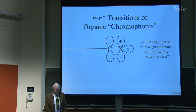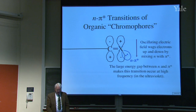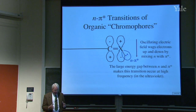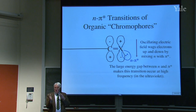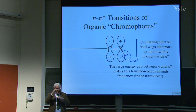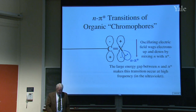As the electron density goes up and down, you absorb light. The large energy gap between the unshared pair and π* means this transition occurs at very high frequency — very high energy light. The frequency of cycling in and out of phase is the difference in energies of the two orbitals, so if they're far apart, it'll be very high frequency — in the ultraviolet, not in the visible.